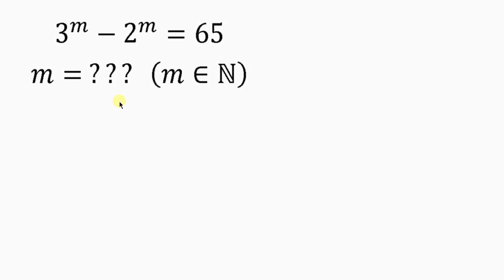What's going on everybody? Welcome back to my YouTube channel. Now look at this nice and beautiful Olympia question we have on the board. It says 3 to the power of m minus 2 to the power of m is equal to 65. We are to look for the value of m.